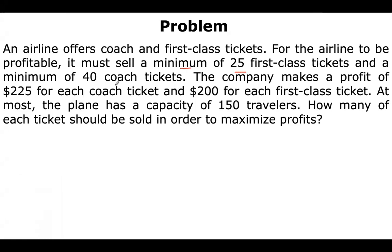What does it mean? There are two types of tickets available: coach and first class. Suppose we assume x as the number of coach tickets and y as the number of first-class tickets. The company makes a profit of $225 for each coach ticket and $200 for each first-class ticket. At most, the plane has a capacity of 150 travelers. How many of each ticket should be sold in order to maximize profit? It is clearly mentioned that this is a maximization problem. We need to maximize our profit and find out the number of each type of ticket.